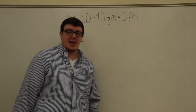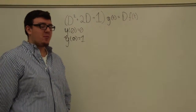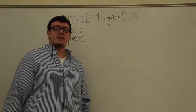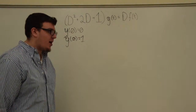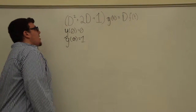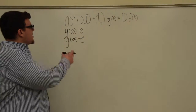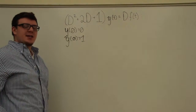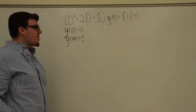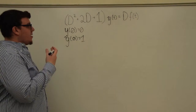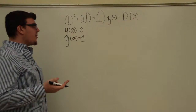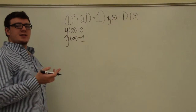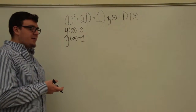Hi, this is Andrew with HKN and today I'm going to be doing an ECE 3101 signals and systems problem. This first problem is that this equation here represents a system where the D's in this equation are derivative operators. Your input is f of t and your output is y of t.